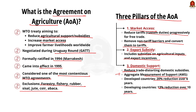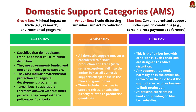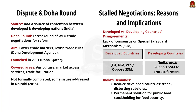Under the domestic support pillar, subsidies are categorized into three types: green box, amber box, and blue box. The differences between them are displayed on screen — please go through it. This Agreement on Agriculture was contentious and was a bone of contention between developed and developing nations, especially India. To solve these issues, a round of negotiation was organized in Doha, Qatar — the Doha Round of negotiation.